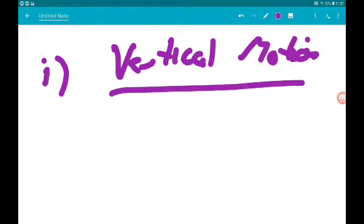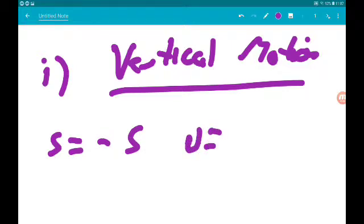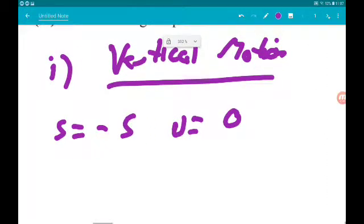Now for SUVAT, the ground is 5 metres below, so S is going to be minus 5. U, in terms of vertical motion, U is going to be 0. V is also going to be 0, so when we hit the ground we stop.